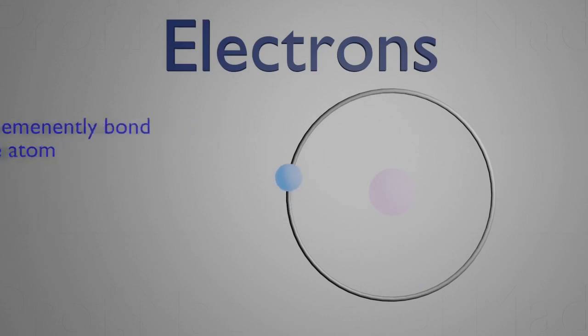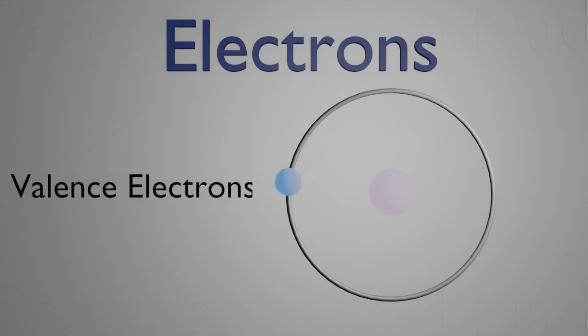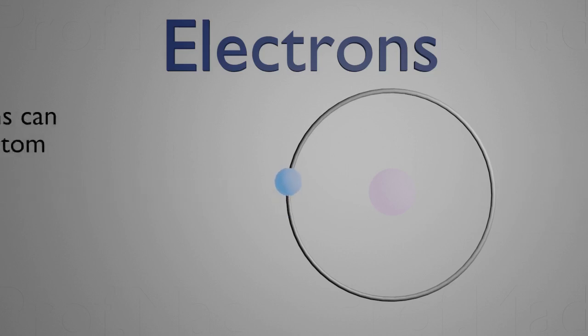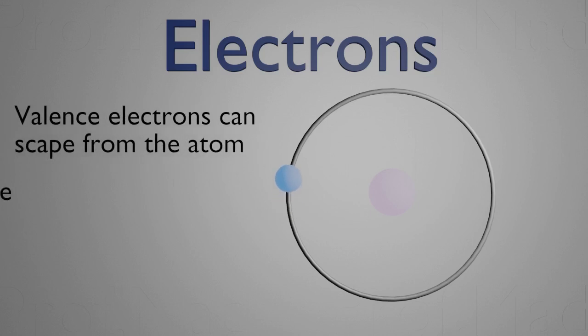The electrons on the outer orbit of the atom are called valence electrons. A valence electron can escape the orbit of the atom and become free.